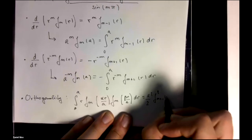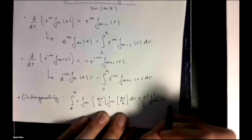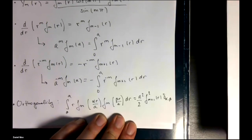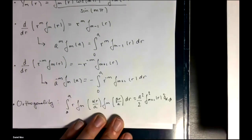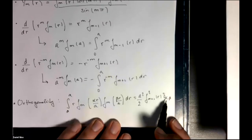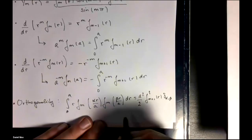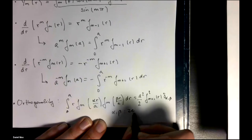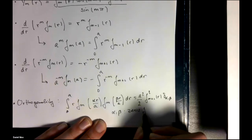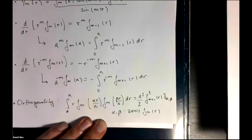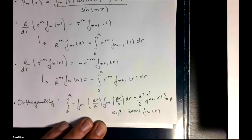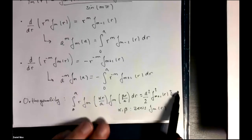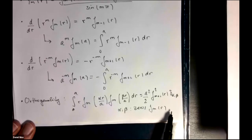You move up an order in the Bessel function and you have a Kronecker delta factor. So this kills any terms where alpha is not equal to beta. And here I've used alpha and beta to denote the zeros of the Bessel function of order m. And this property is going to be crucial to us as we've done with the previous examples.